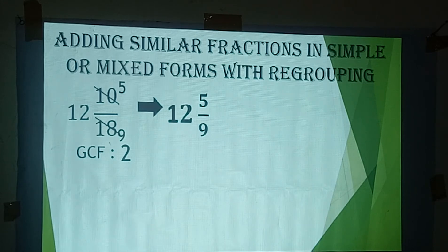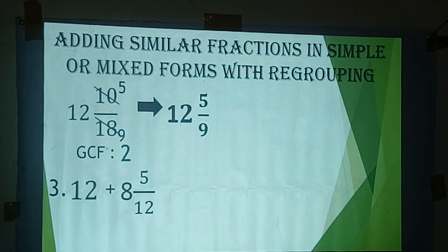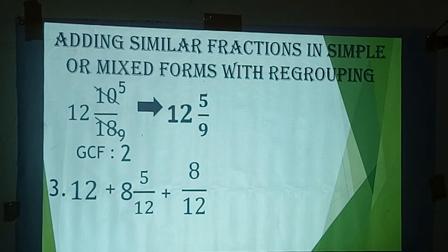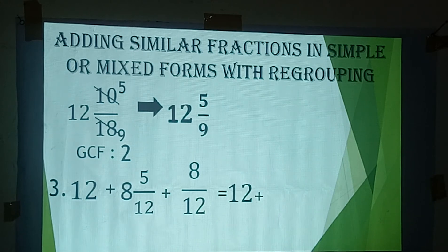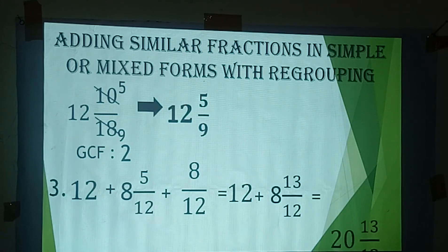Another example: 12 plus 8 and 5/12 plus 8/12. This time we have a whole number followed by a mixed form followed by a simple fraction. We can add the mixed form and the simple fraction first. So 8 and 5/12 plus 8/12 equals 8 and 13/12, and then 12 plus 8 equals 20 and 13 over 12. That is not the final answer since 13 over 12 is greater than 1.